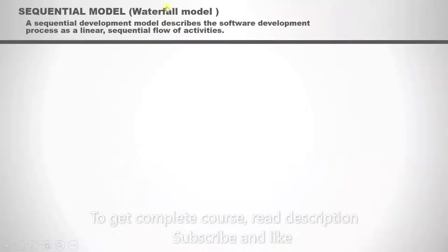An example for the sequential model is a waterfall model. We'll get into why it is named that way in a bit. Here is the definition of the model. A sequential development model describes the software development process as a linear sequential flow of activities. So in this model the development model is defined as a linear or sequential flow of activities.